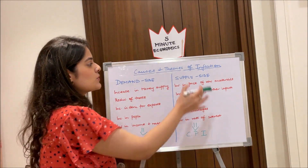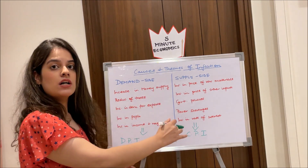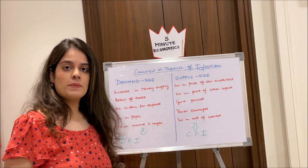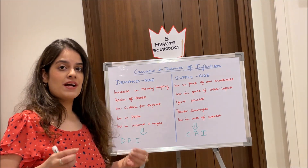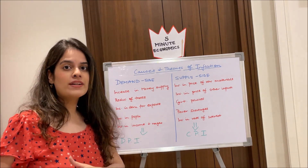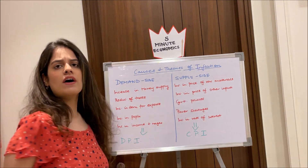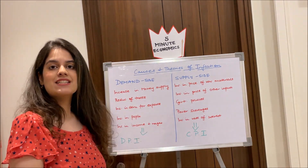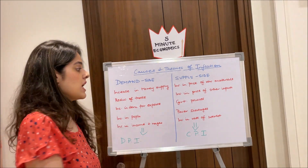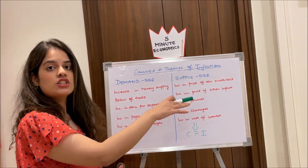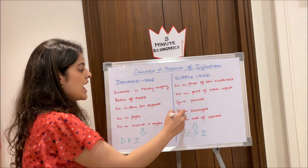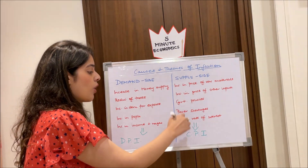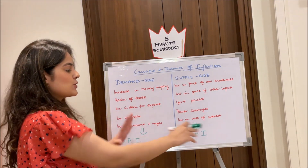Make sure you don't confuse 'pull' and 'push' — students often do. Now, supply-side factors are seen from the point of view of a producer or supplier. These include: increase in price of raw materials — when raw material prices rise, the product becomes more expensive; increase in price of other inputs; government policy changes such as increased taxes; power shortages; and increase in rate of interest. These factors ultimately lead to cost-push inflation.